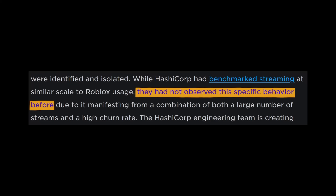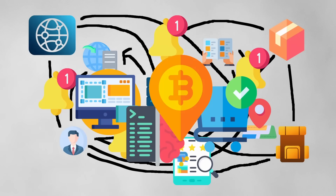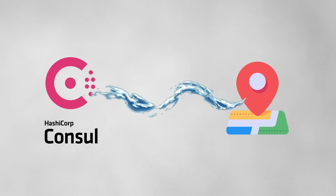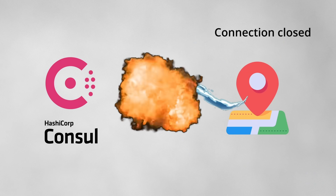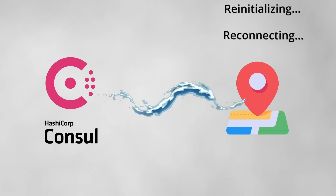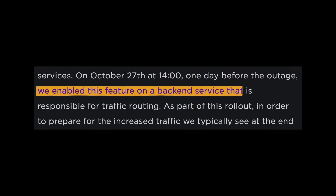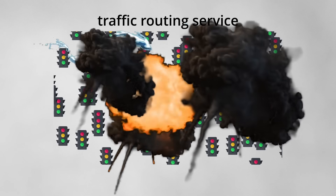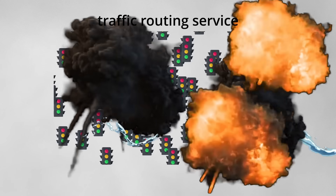Apparently this issue did not show up during HashiCorp's testing because Roblox had a very unique traffic pattern. Not only did a massive number of clients stream from the key-value store, but there was also a lot of churn — clients would often close the stream, self-destruct, re-initialize, and open a new stream. The traffic routing service, which had streaming enabled the day prior to the outage, must have been a particularly big and churny service which pushed Consul over the edge.